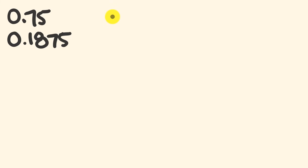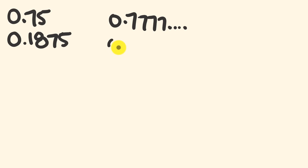The next one we're going to have a look at is recurring decimals and how to convert those — say something like 0.777... or say 0.24242424, and how to convert those guys across to their equivalent fractions.